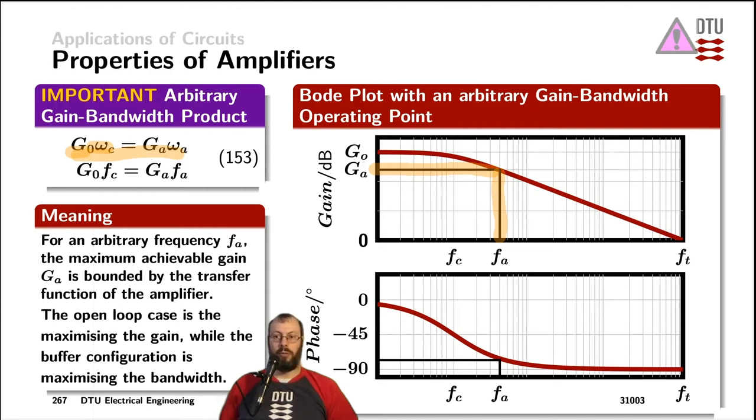When we operate an amplifier in open loop, no matter if it's a switch mode or a linear amplifier, we maximize the gain that we can get at low frequencies. And if we go to the other extreme and operate it in a buffer configuration, we are maximizing the bandwidth that the amplifier is operating with.